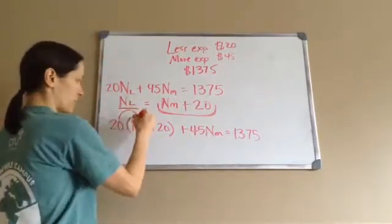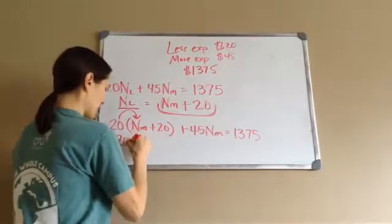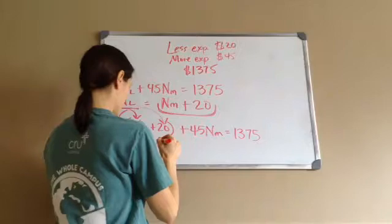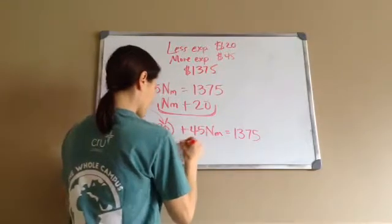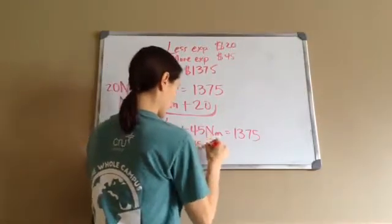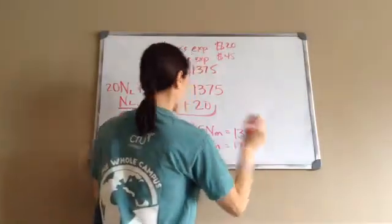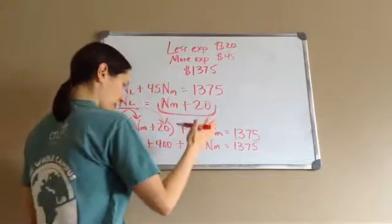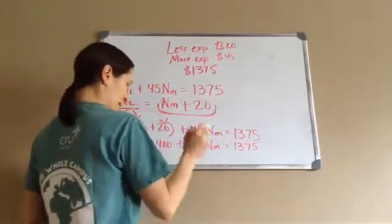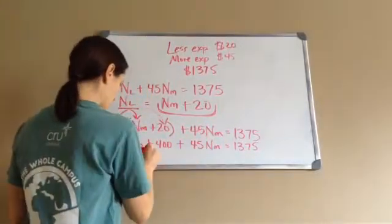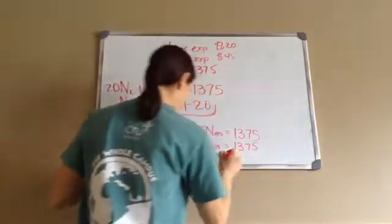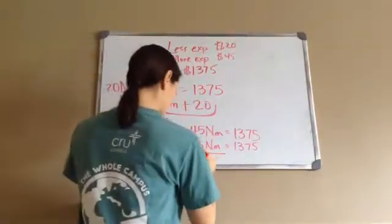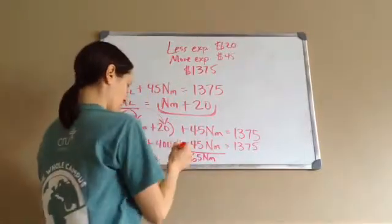Let's go and do this. We have to do the distributive property. 20NM plus 400 plus 45NM equals 1375. Now I'm going to try to go and get, actually let's go and answer this first. So 20NMs plus 45NMs. This would be like 20 dogs plus 45 dogs means 65NMs, or dogs.